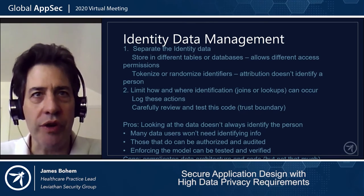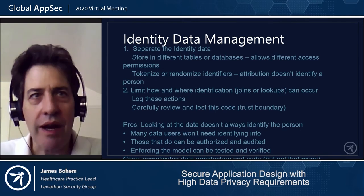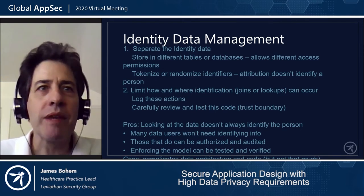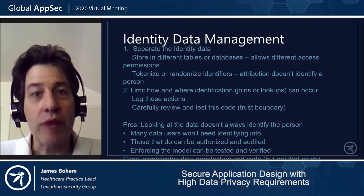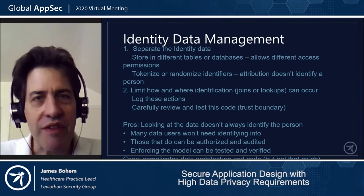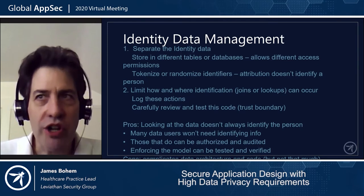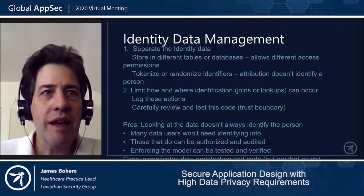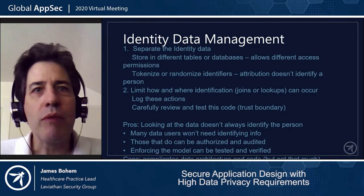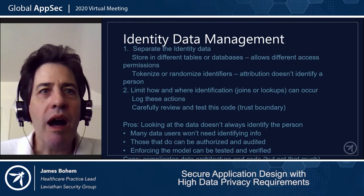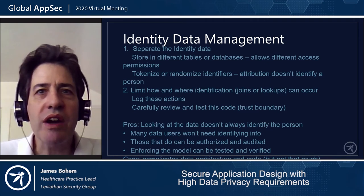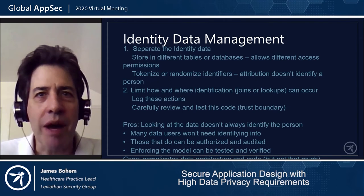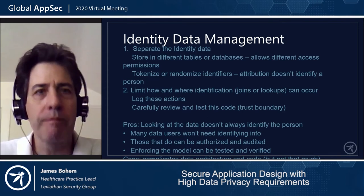This is a critical section of code involving a trust boundary that we want to test, threat model, and pay close attention to during the SDLC. Benefits include: we can look at most of the data without instantly identifying the person back. Many users aren't going to need that identifying information; those that do, we can authorize, audit, and pay close attention to. Enforcing this model can be verified and tested, and we can prohibit actions in code pretty clearly. The complication is that the data architecture and code get more complicated by making this split and carefully rejoining information under certain circumstances.